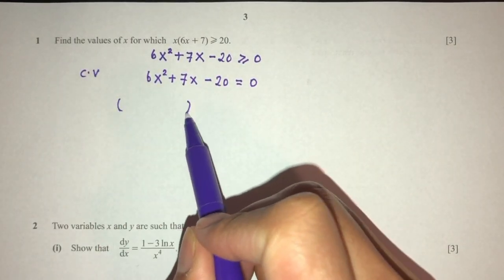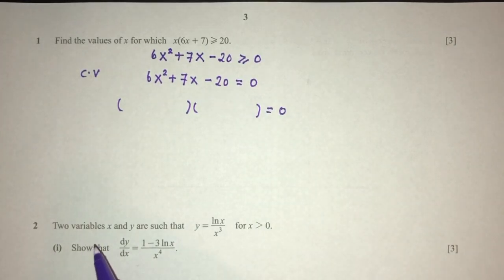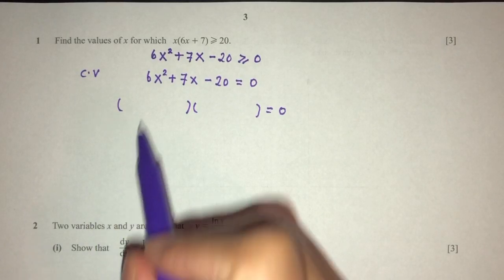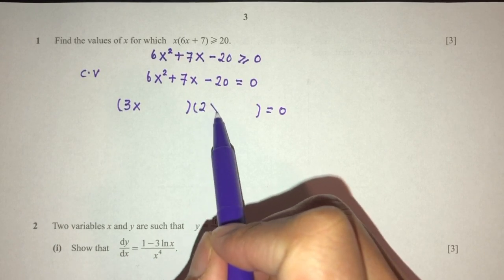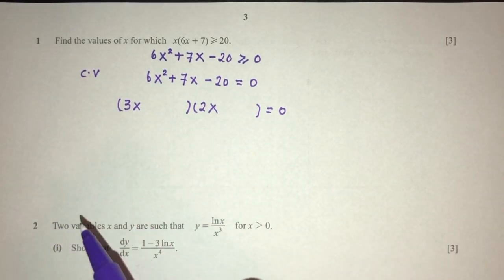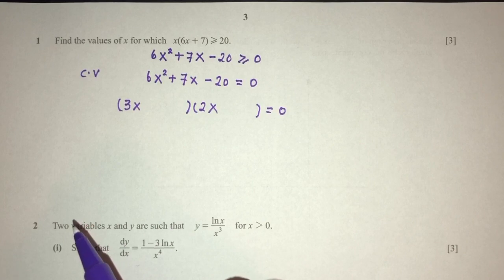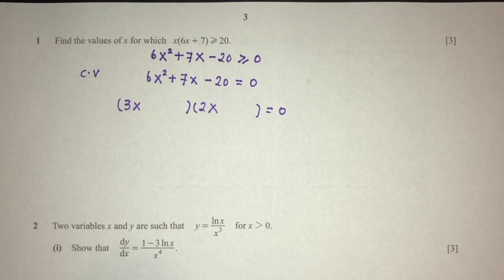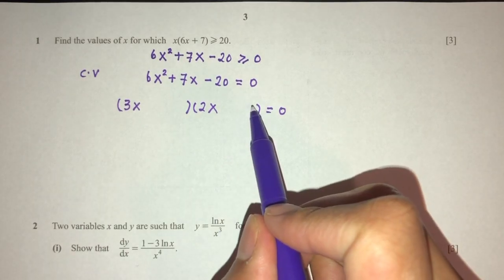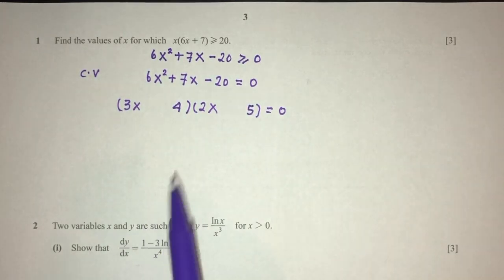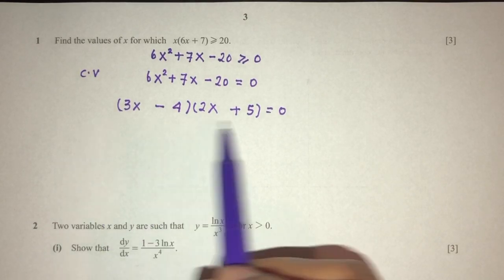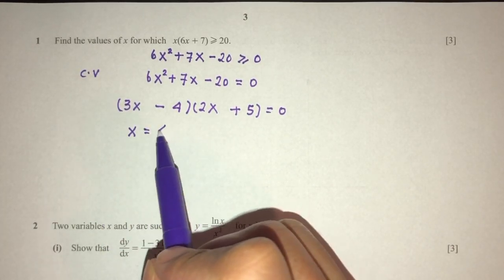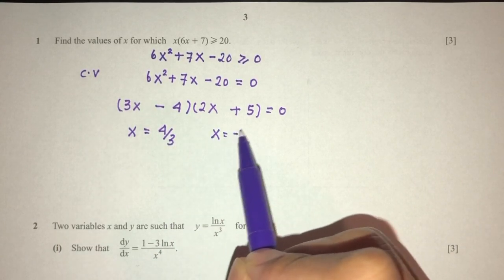Now we can find the critical values. We have to equate that to 0: minus 20 equal to 0. Now we have to factorize this quadratic equation. We need to see what works to get plus 7. So 6 can be 6×1 or 3×2 — let's try 3×2. And 20 can be 1×20, 2×10, or 4×5. Let's try 5×4, so 5 is here and 4 is here. To get plus 7 we can have plus 15 minus 8. That is correct. So x = 4/3 and x = −5/2.